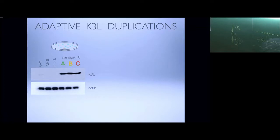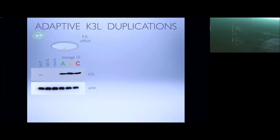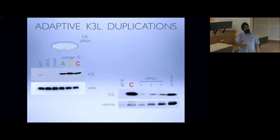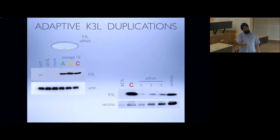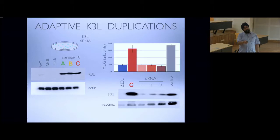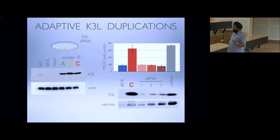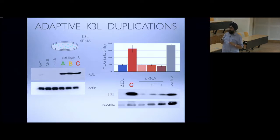This is important because if you knock down K3L with an siRNA specifically against it, as you can see in the replicates, you basically drop K3L levels and viral fitness drops back to the parental level. All of the gain in fitness seen in the replicates can be completely explained by the K3L expansion. This is all done in human HeLa cells.